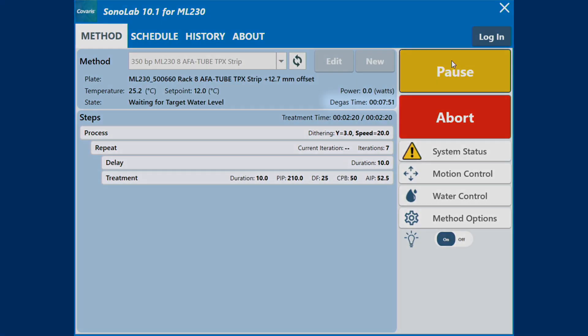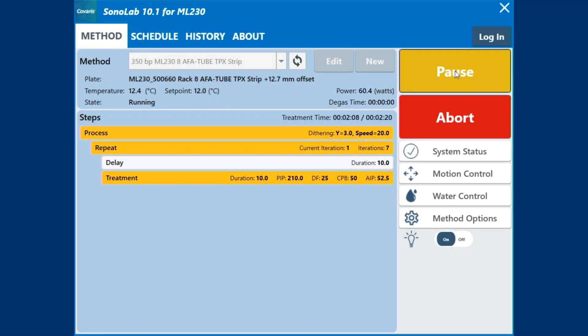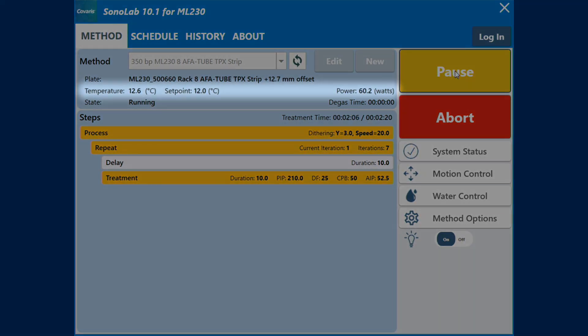There is a timer that counts the degas down. As the method runs, the process and treatment bars turn yellow and the actual average incident power and temperature data are displayed.